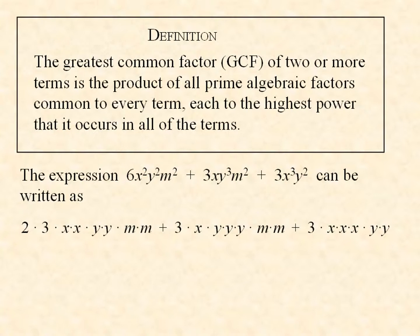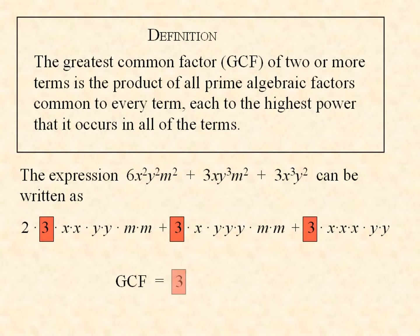We look at the numbers first. The first term contains a 2 and a 3, but the second term only contains a 3, and likewise for the third term. So as far as the numbers are concerned, we can use a 3, because there is a 3 in each of the terms. The numerical part of the greatest common factor is 3. Then we look at the terms again and consider the variables. The first term contains two x's, but the second term contains only one x. The third term contains three x's. The most x's we can take from each term is 1x, so the greatest common factor consists of a single x.